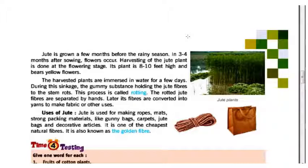Uses of jute include mats, strong packing materials like gunny bags, carpets, jute bags, and decorated articles. It is one of the cheapest natural fibers. It is also known as the golden fiber.